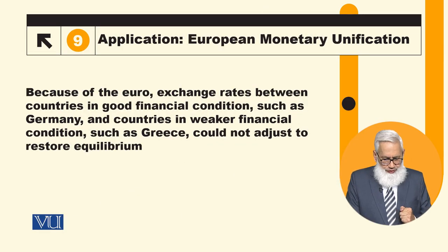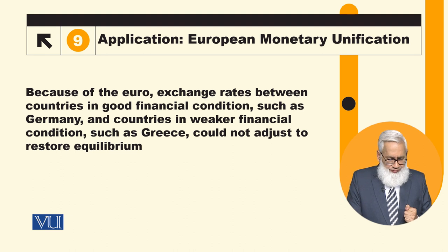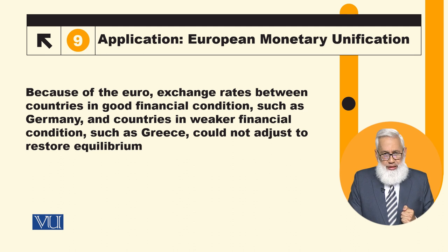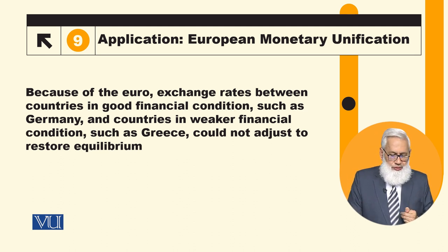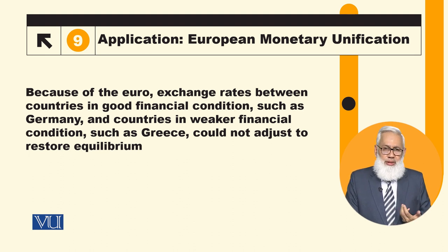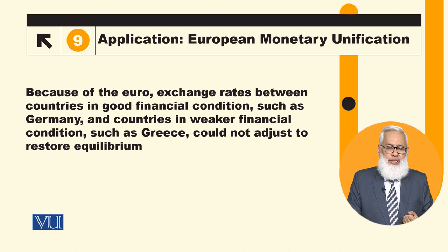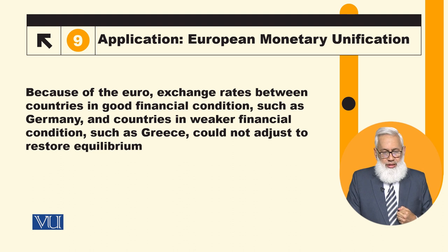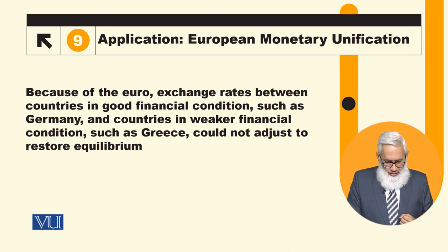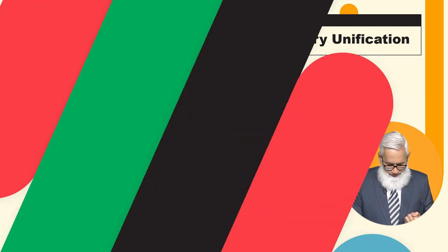Because of the Euro, exchange rates between countries in good financial conditions such as Germany and countries in weaker financial conditions such as Greece could not adjust to restore equilibrium. The problem is that some countries like Germany are performing well, while others like Portugal and Greece are not, so the common exchange rate system cannot work for all of them.